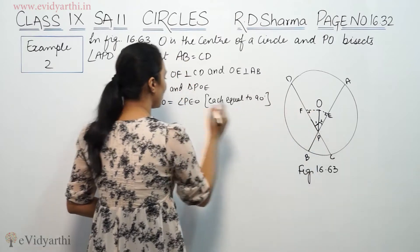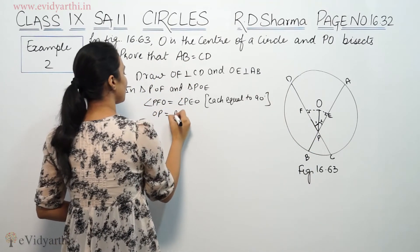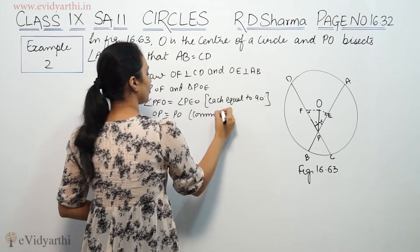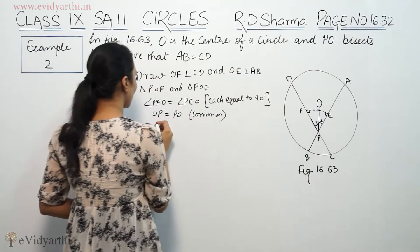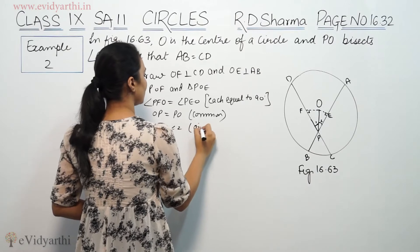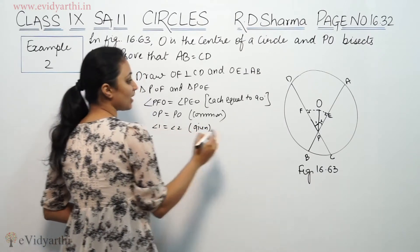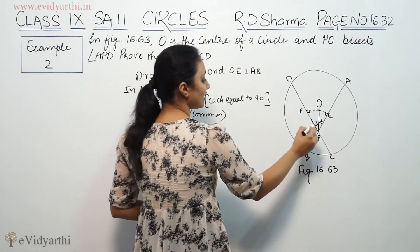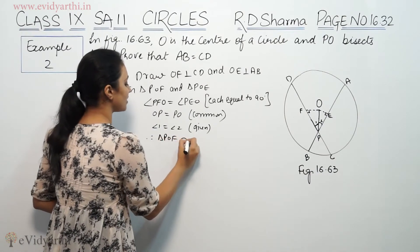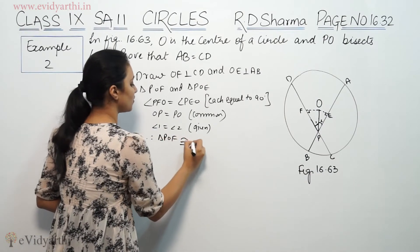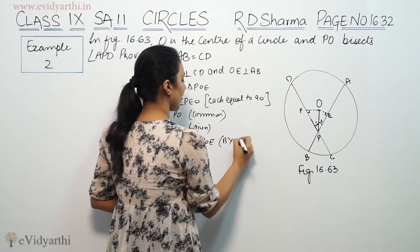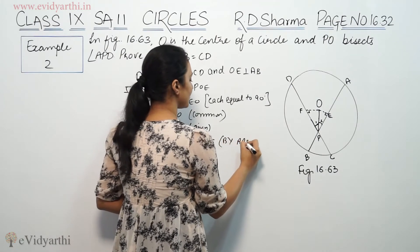Second, OP is common. And third, angle 1 is equal to angle 2, which is given. So by angle-angle-side rule, triangle POF is congruent to triangle POE.